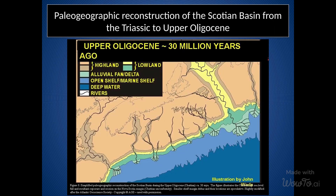The map presented here is a simplified paleogeographic reconstruction of the Scotian Basin dating back to 30 million years ago. It illustrates the ancient shoreline and the location of smaller shelf-margin deltas. However, it should be noted that the locations of these deltas are speculative and further research is needed to confirm their exact locations. The reconstruction covers a time period from the Triassic to the upper Oligocene, providing a glimpse into the geological history of the region. This map is useful for understanding the evolution of the Scotian Basin and can also aid in the exploration of hydrocarbon resources by providing insight into the location of ancient submarine fans and other depositional environments.